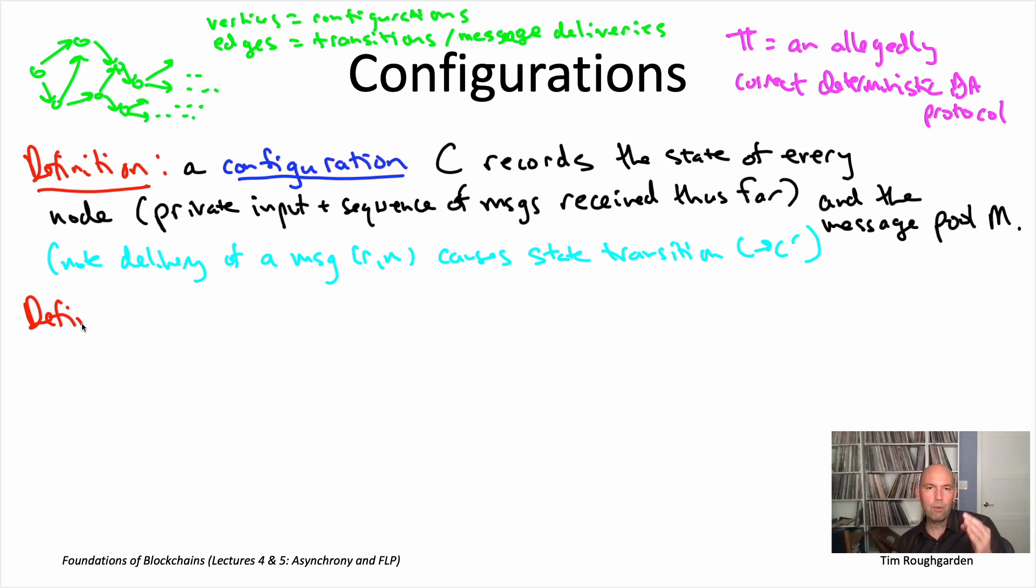Now for the next definition, I want to classify configurations into one of three categories. First of all, we're going to be thinking about Byzantine agreement in the special case in which the only valid values are zero or one. So the input of every node is a zero or a one, and that's also going to be the only possible outputs. Now remember, we're proving an impossibility result, so it's only that much more impressive we can get away with proving it even when there's only two available values.